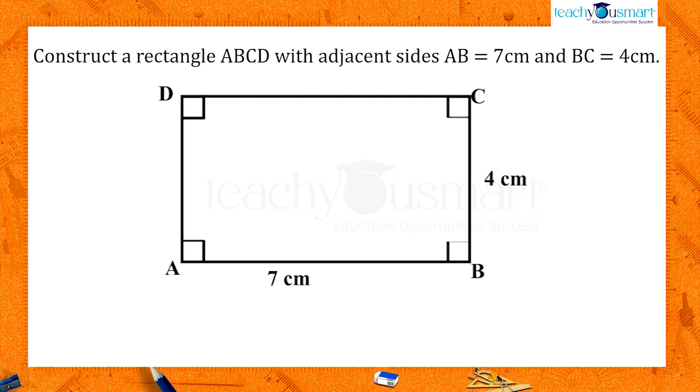Remember the properties that each angle of the rectangle is 90 degrees and opposite sides are equal in length. Therefore, angle A equals angle B equals angle C equals angle D equals 90 degrees.